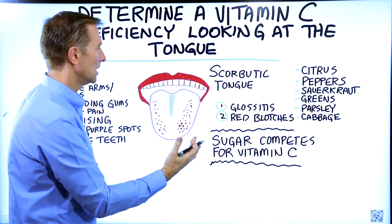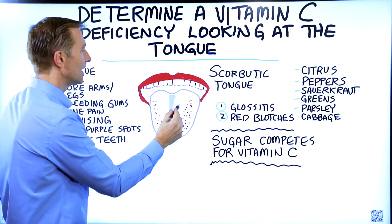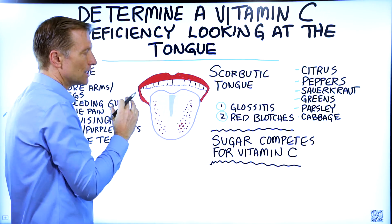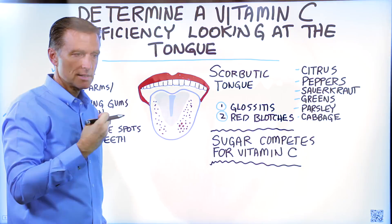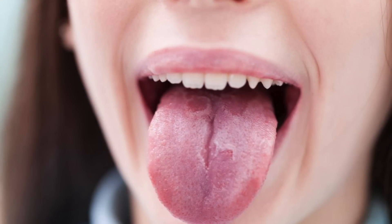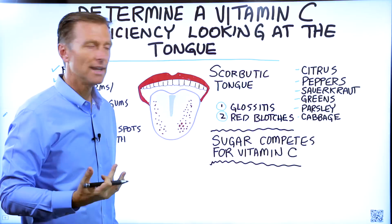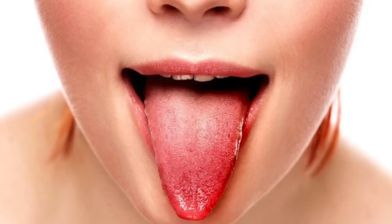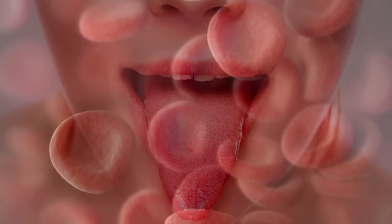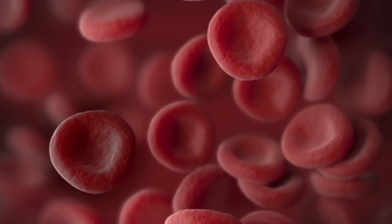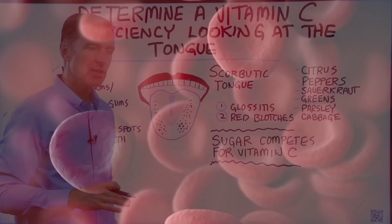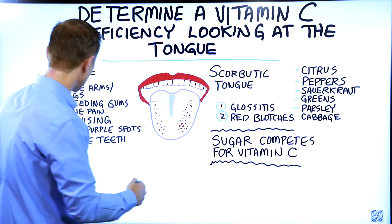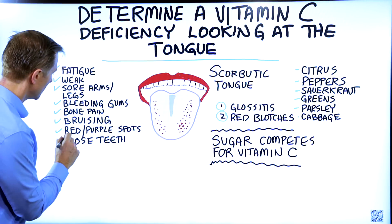You have a combination of glossitis, which is a condition where the tongue is inflamed, kind of shiny, sometimes red, with red blotches on the side through here. That's basically very tiny micro-hemorrhaging of the blood vessels. You can also see that in other parts of the body, like the lower legs, with these red-purple spots.